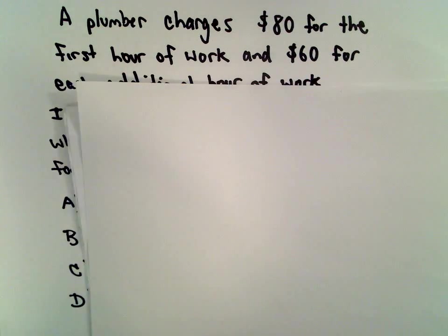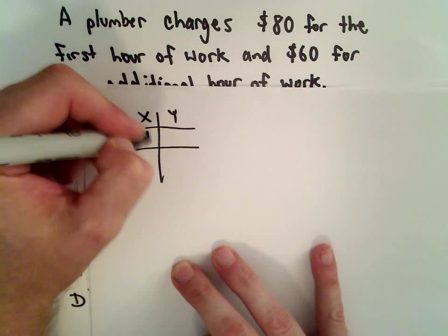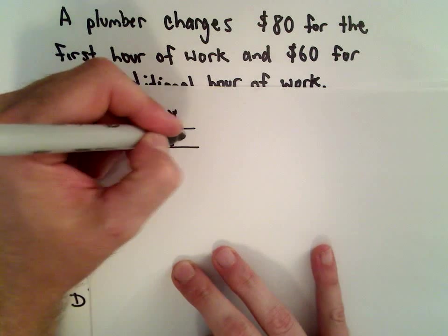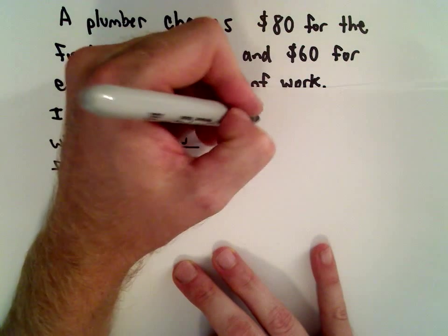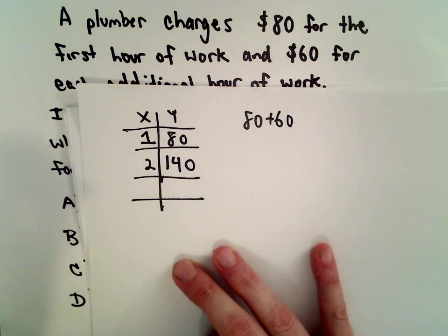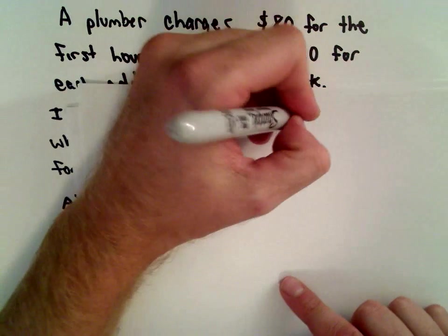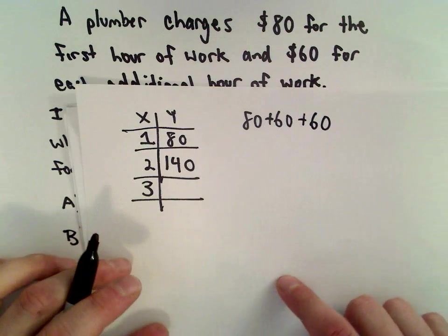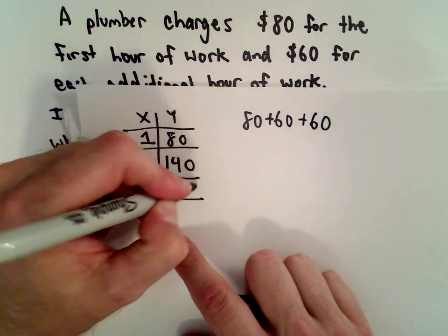Well, I just want to get a feel for what's going on here. If the plumber works only one hour, he's charging that $80 amount. If he works two hours, it's going to be 80 plus an additional 60 for a total of $140. If the plumber works a total of three hours, it's going to cost you another $60. If you add on another $60, that's going to be $200 total.